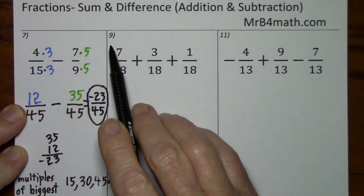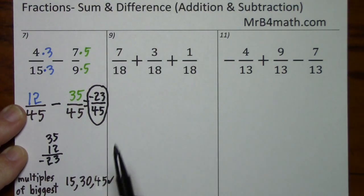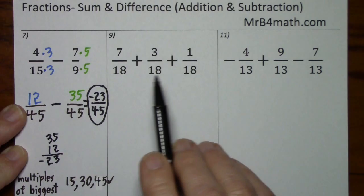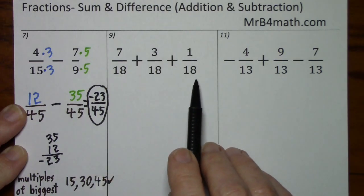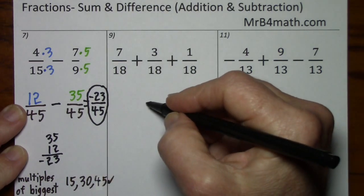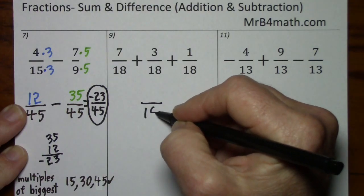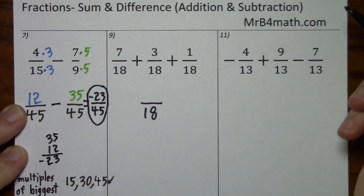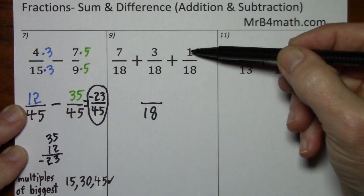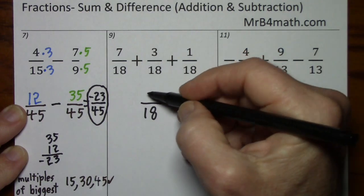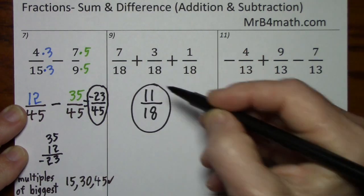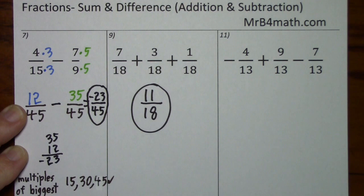Looking at number 9, we have common denominators and all the fractions are positive. So the denominator will be 18. 7 and 3 is 10, plus 1 is 11. That's our answer.